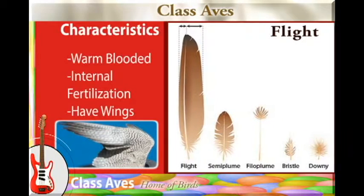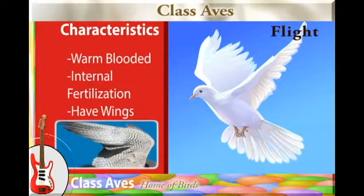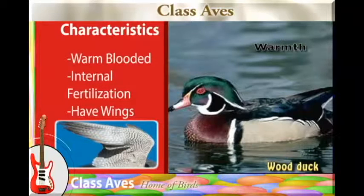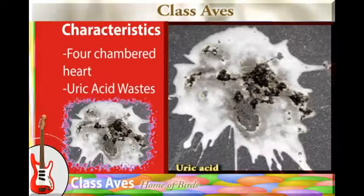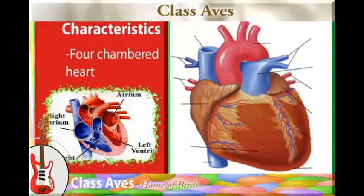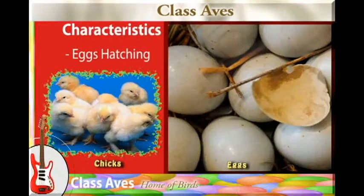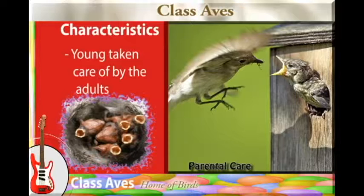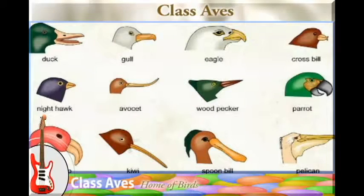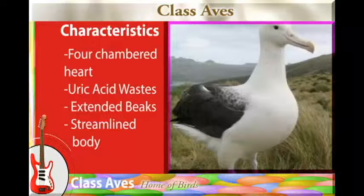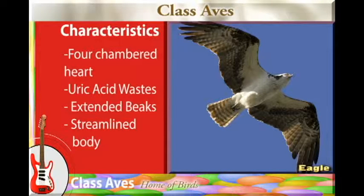Feathers assist in flight and also provide warmth to the animal. The excretory product is uric acid, which does not use a lot of water. The heart is made up of four chambers, eggs hatch into young ones which are taken care of by the adults, beaks are used for feeding, and the body structure is streamlined to reduce resistance against airflow during flight.